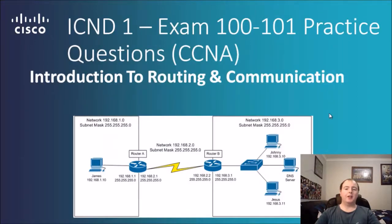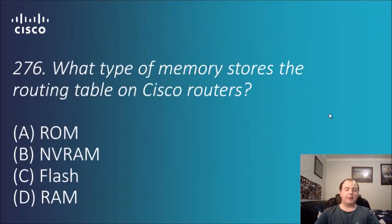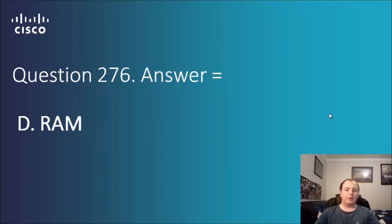G'day guys and welcome to another lot of Cisco practice questions. Today we're going to be talking all about introduction to routing and communication. Question 276: what type of memory stores the routing table on Cisco routers? Options are ROM, VRAM, Flash, and RAM. The answer for this one is surprisingly D — RAM.